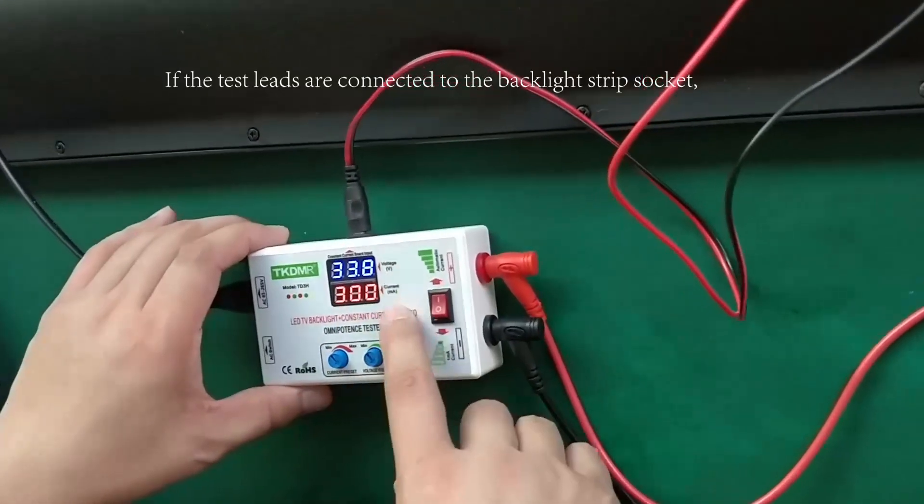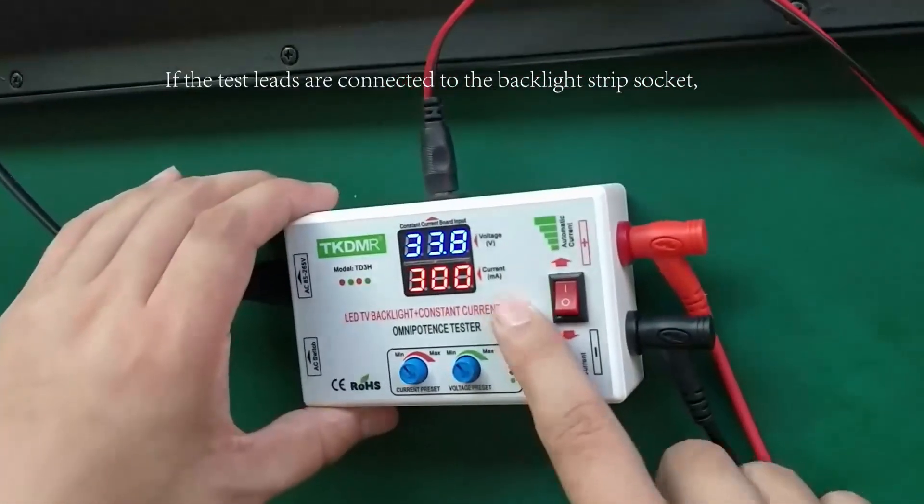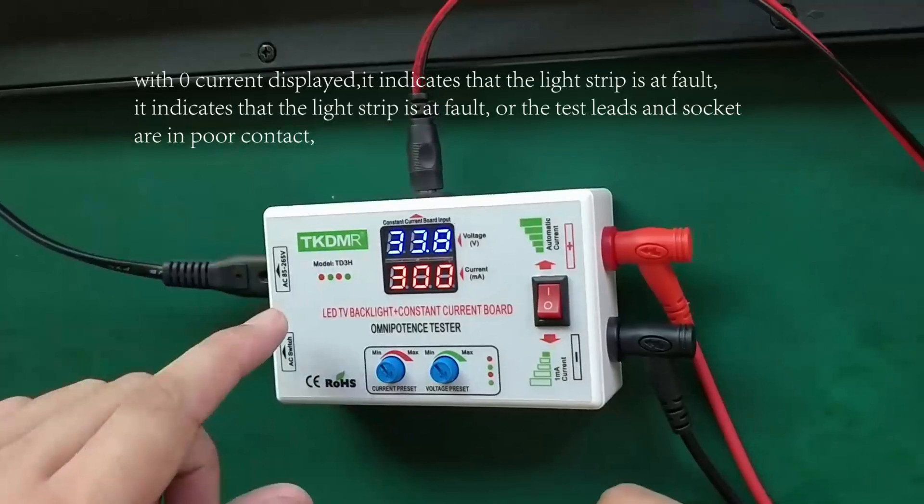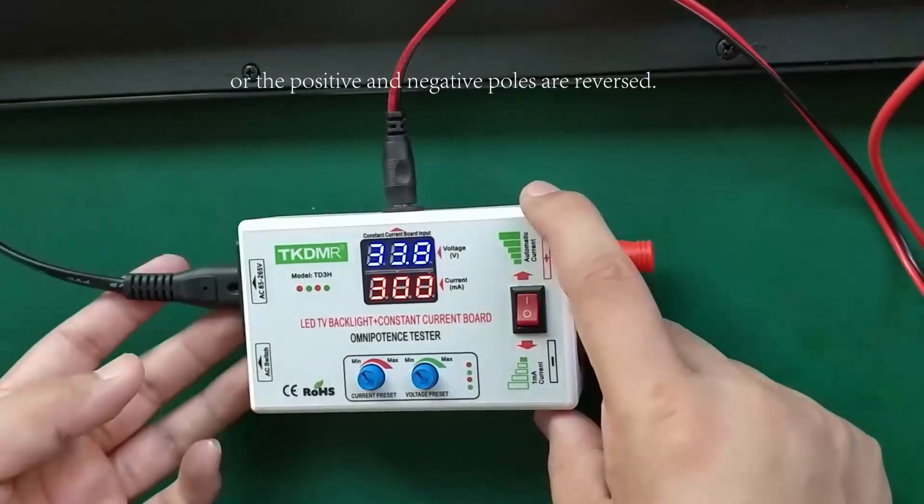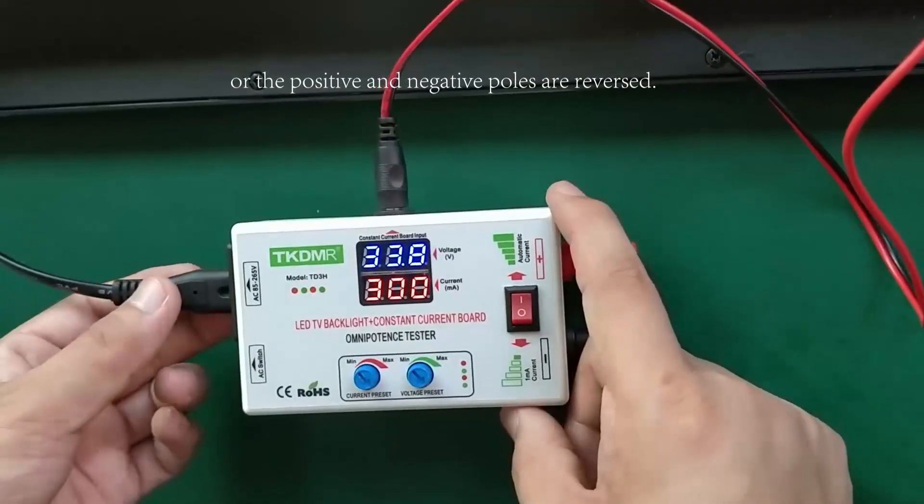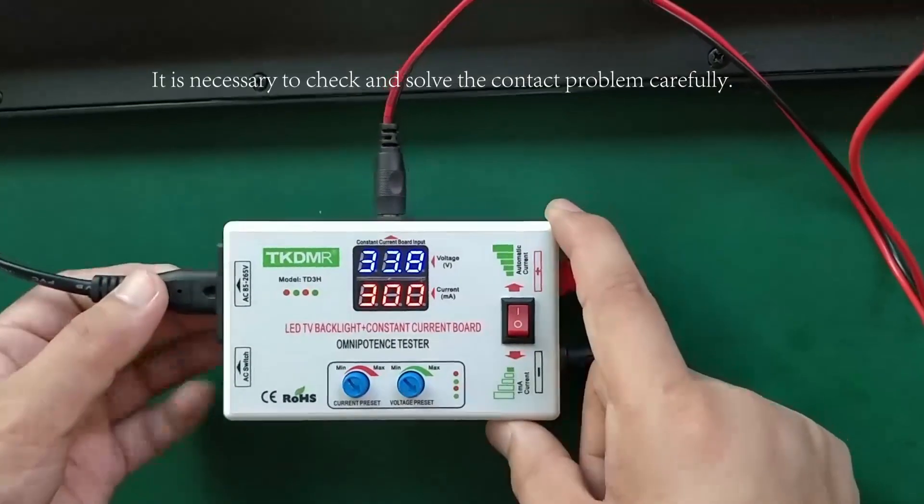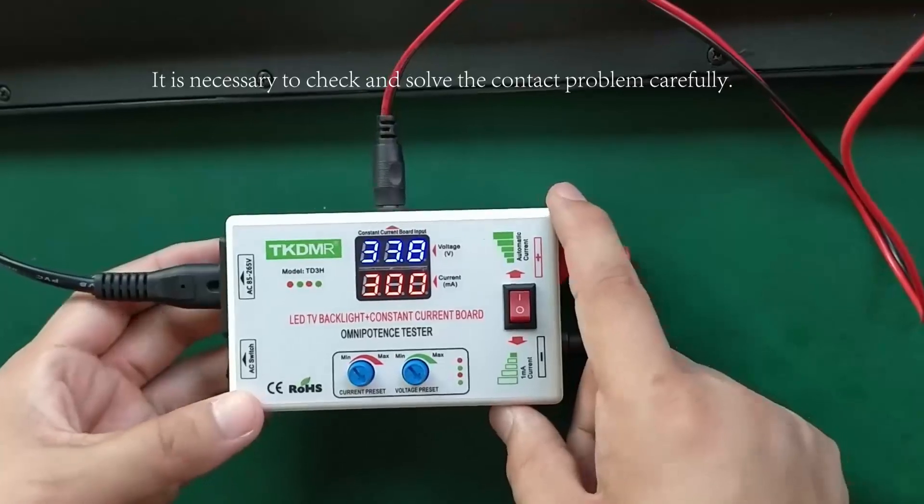If the test leads are connected to the backlight strip socket with zero current display, it indicates that the test leads and socket are in poor contact or the positive and negative poles are reversed. It is necessary to check and solve the contact problem carefully.